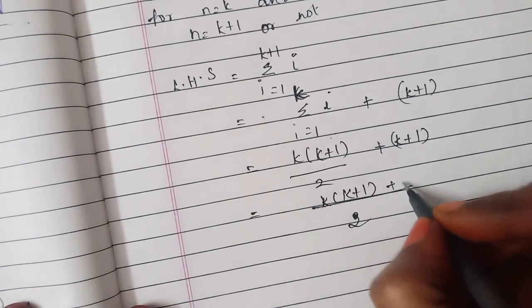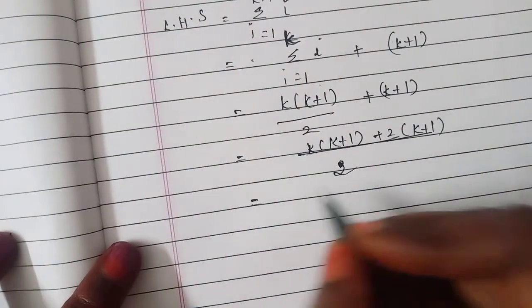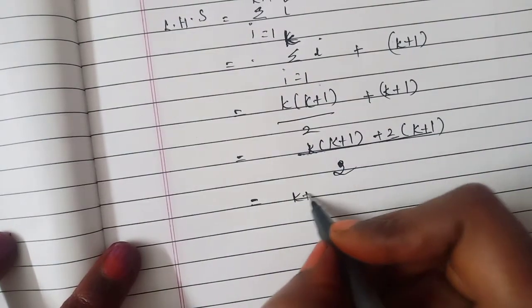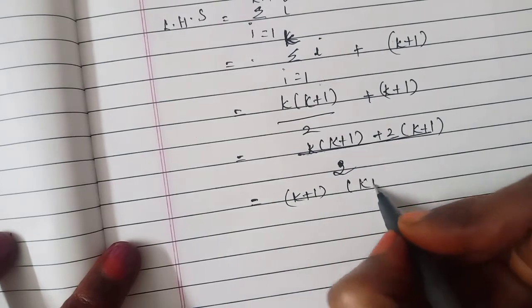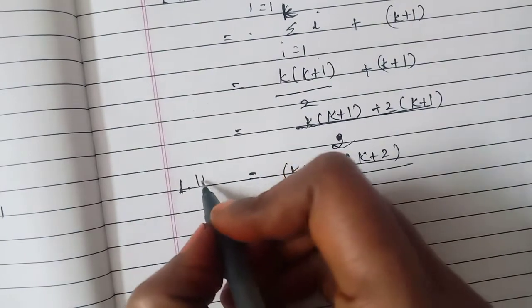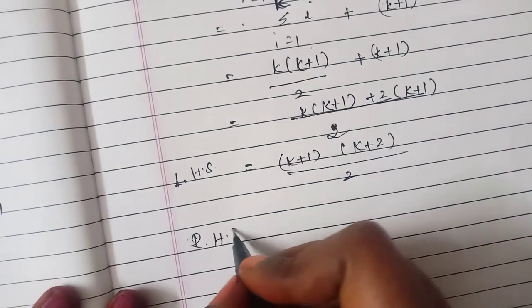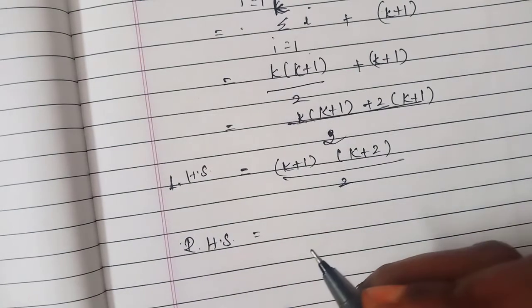We'll take common as 2 k into k plus 1 plus 2 into k plus 1. Here k plus 1 is common and we'll take this k plus 2 divided by 2. This is our LHS.